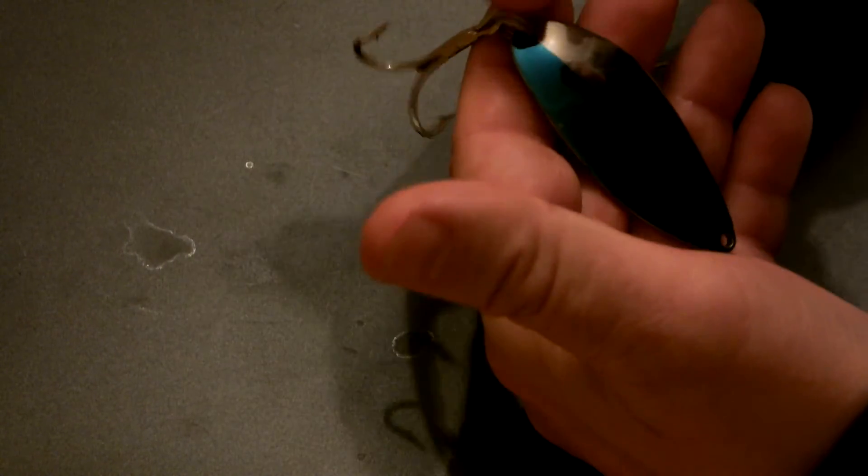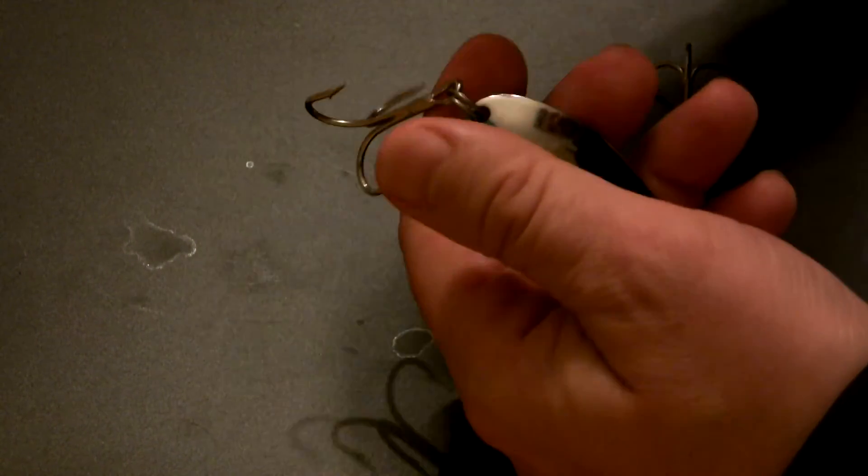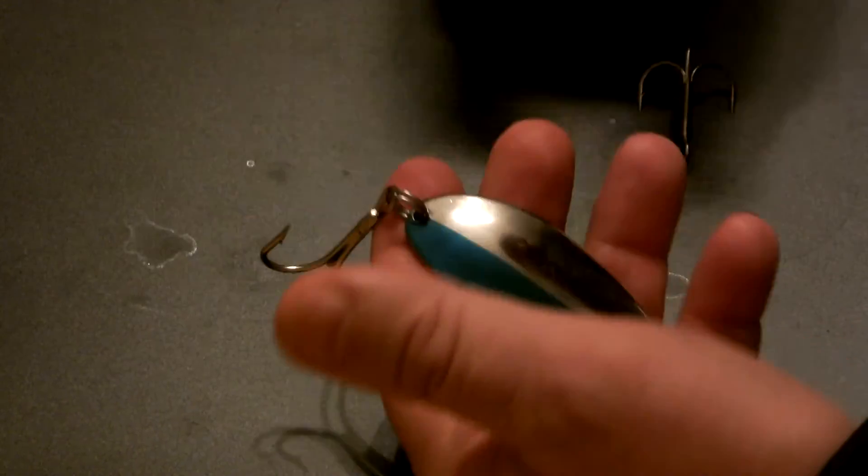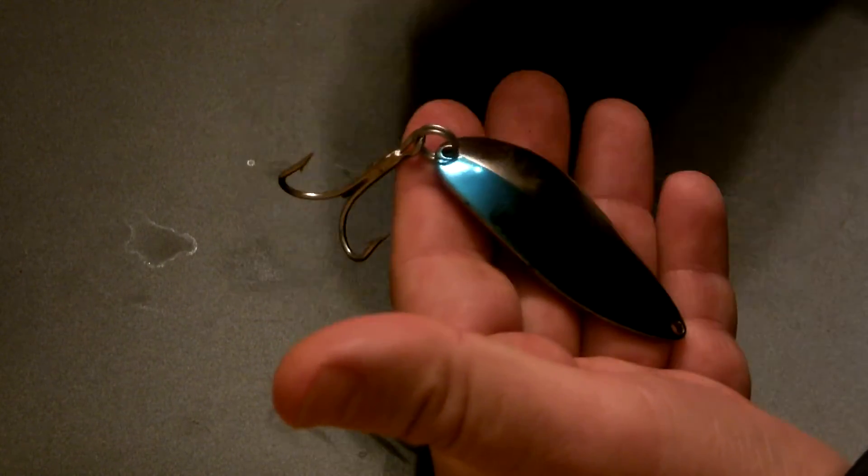I knew the basic technique of taking a hook off, which is separate the split ring, put the hook in, rotate it around until it comes off. And then I would take the new hook and reverse the process to put it on.